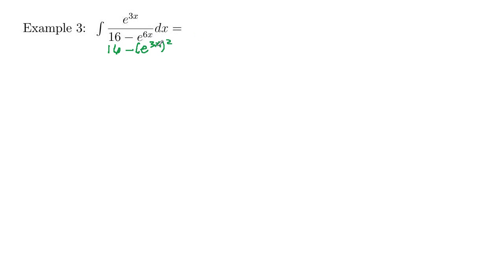Then I see a function, and then the derivative of e to the 3x would be e to the 3x times 3, and I see that e to the 3x up here. So I want to use a u substitution here. u equals e to the 3x, and then my du is going to be 3 e to the 3x.